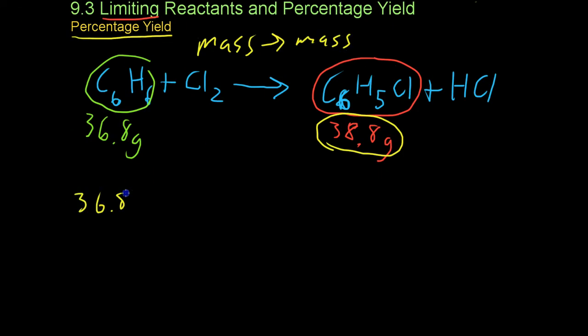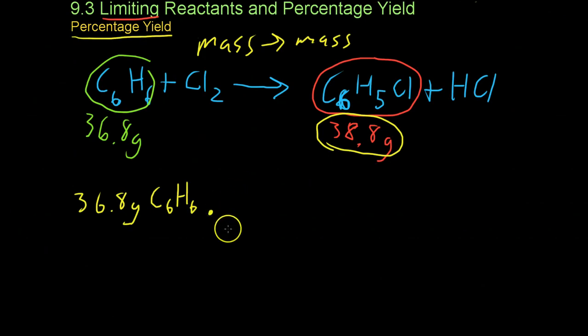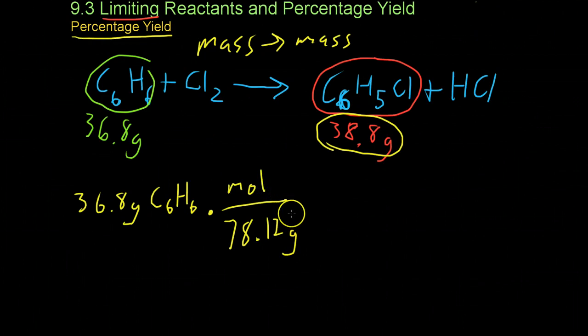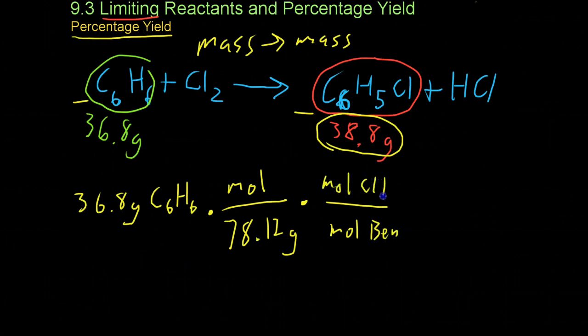You start off with your given, which is 36.8 grams of C6H6, times its molar mass so that you can later use the molar ratio. That's 78.12 grams for each mole. Now you use the ratio of the two, and it's a one-to-one ratio. So for each mole of benzene, you get 1 mole of chlorobenzene.